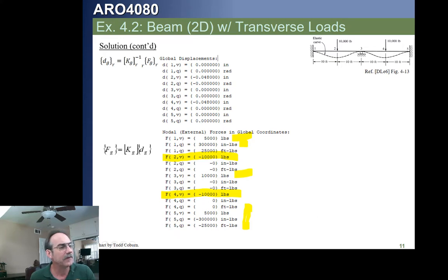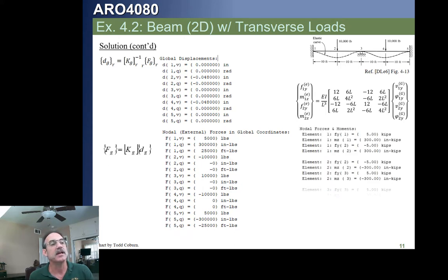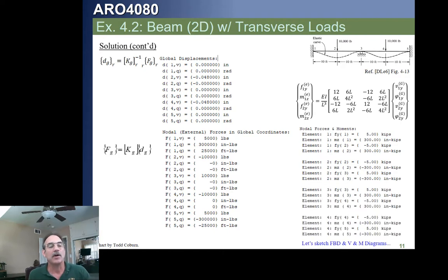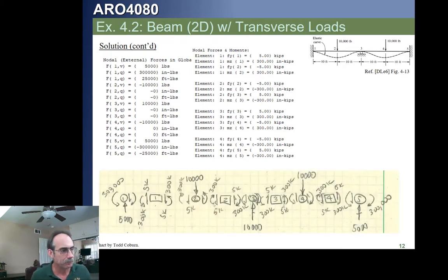We take the global displacements for each element and plug them in to calculate the element nodal forces and moments in the sign convention from the prior slide. Now we're ready to draw an exploded free body diagram. We start by plotting each of our nodes spread out across the page, giving as much space between them as possible to draw the forces.